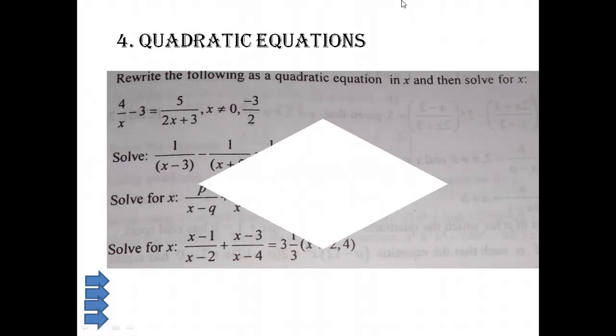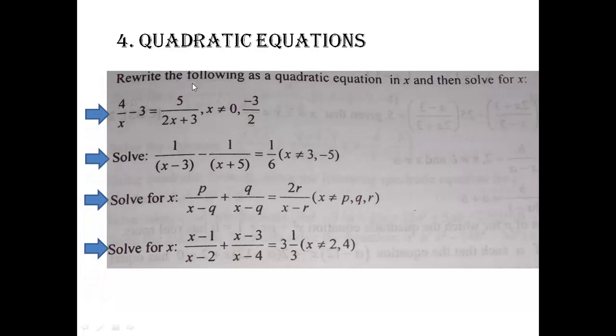We start with chapter number 4 — quadratic equations. Generally they are asking one word problem and one term for solving for x. In section D you will get the first question to solve for x only. They are not going to ask you simple questions like splitting the middle term; they will give you sums which contain fractions and then you have to solve for x. You can find many such examples from different books like R.D. Sharma or Together With.